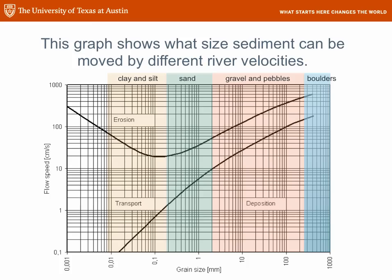This is a graph of sediment transport, showing what happens to a particular size sediment at a particular river velocity. The flow speed of the river is on the vertical axis, grain size on the horizontal. Grain size is divided by color into categories: clays and silts, sand, gravel, pebbles, and boulders. There are two lines on this graph. Those lines define regions: at the top, grains are being eroded — the river can pick them up and make them move. In the middle section, sediment can be transported but not plucked out. At the bottom, the particle will drop out and be deposited.